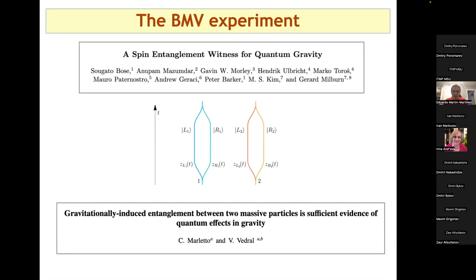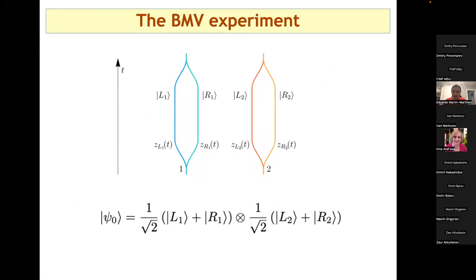To summarize the literature, I'll talk about a particular experiment that refers to the whole family of gravity-induced entanglement experiments. This is probably the most famous one, called the BMV experiment — standing for Bose, Marletto, and Vedral. The idea is they have two masses that can be put in a superposition of two different trajectories, and these two masses interact with each other only through the gravitational field.